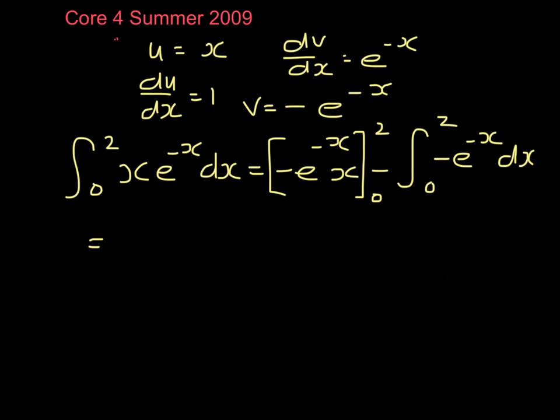So we have, substitute in the 2, we have minus 2 e to the minus 2. If we substitute in 0, it's going to disappear because I'm multiplying by 0, plus the integral from 0 to 2 of e to the minus x dx.